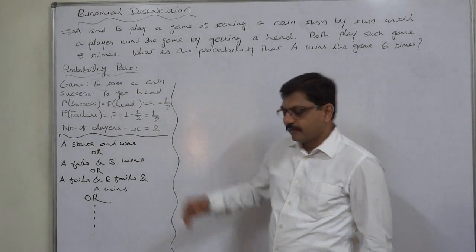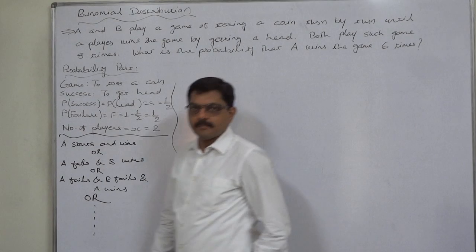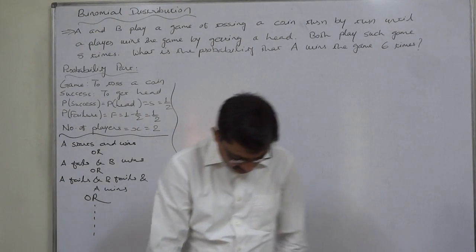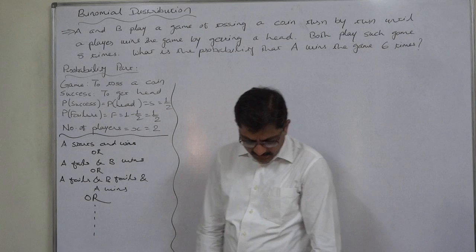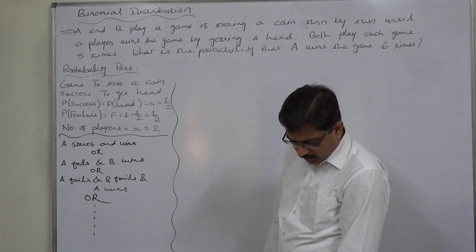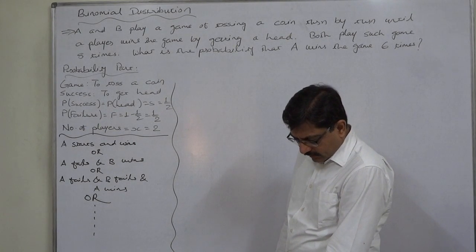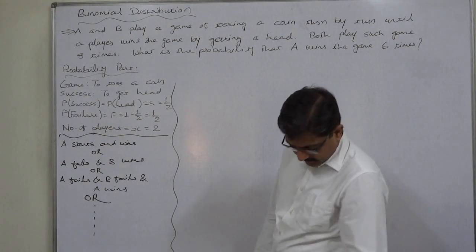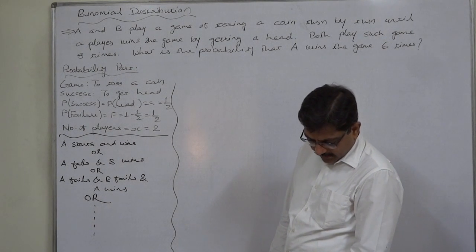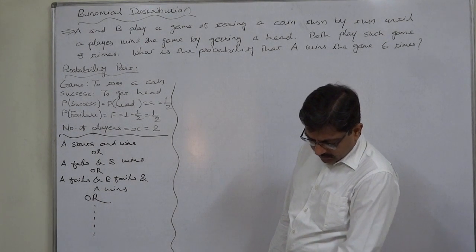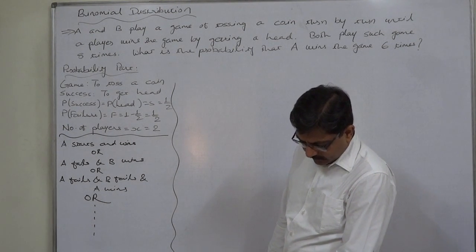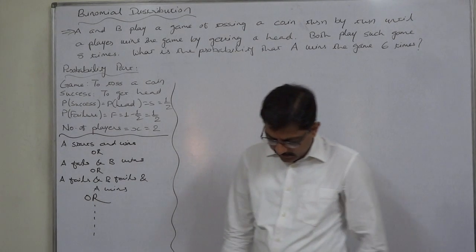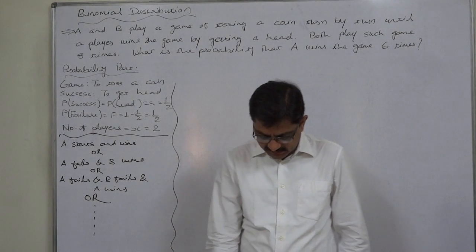This is the case of infinite game. A and B play a game of tossing a coin. The winner is the one who gets the head first. The game is started by A. It was decided to play the game eight times. What is the probability that A will win six times?